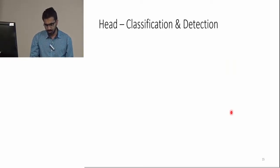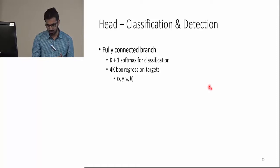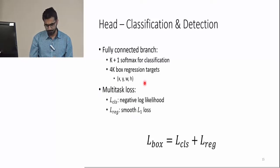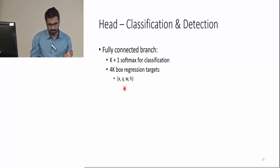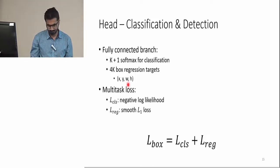Some more details about the head. It has a fully connected branch which classifies into k+1 classes, k being the number of classes in the dataset and one for the background, and it predicts 4k bounding box parameters—the x, y centers and the width and height of the bounding boxes. This layer is trained using multi-task loss, which is the sum of classification loss and bounding box regression loss.